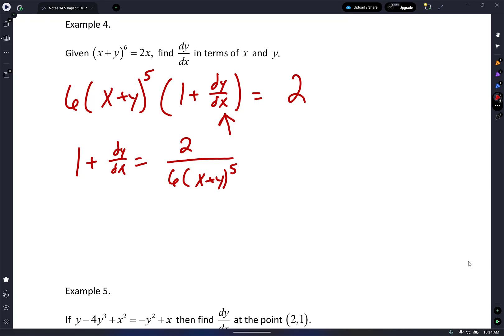When I do that, I have 1 plus dy/dx equals 2 over 6(x + y)^5. You can reduce that 2 and that 6, so that's a 1 now and that's a 3.